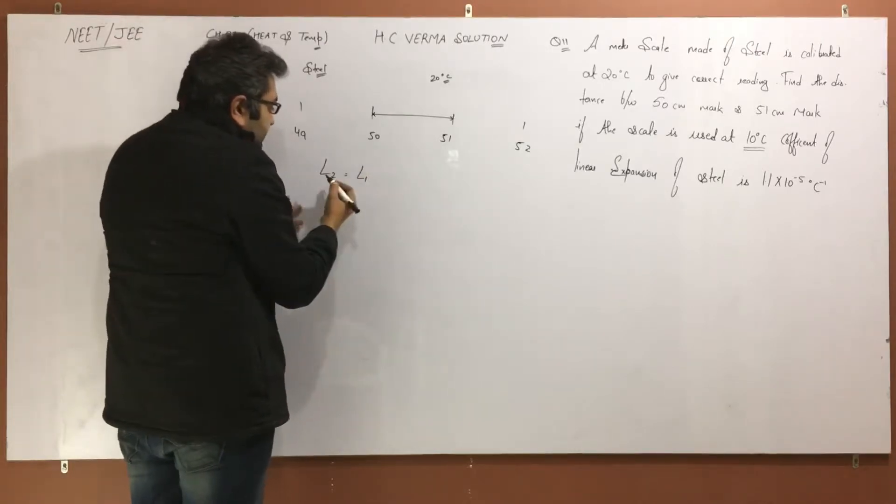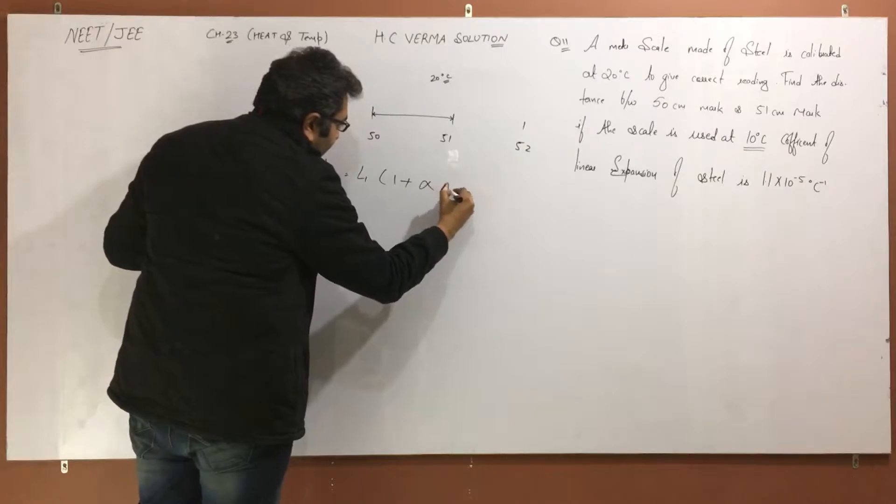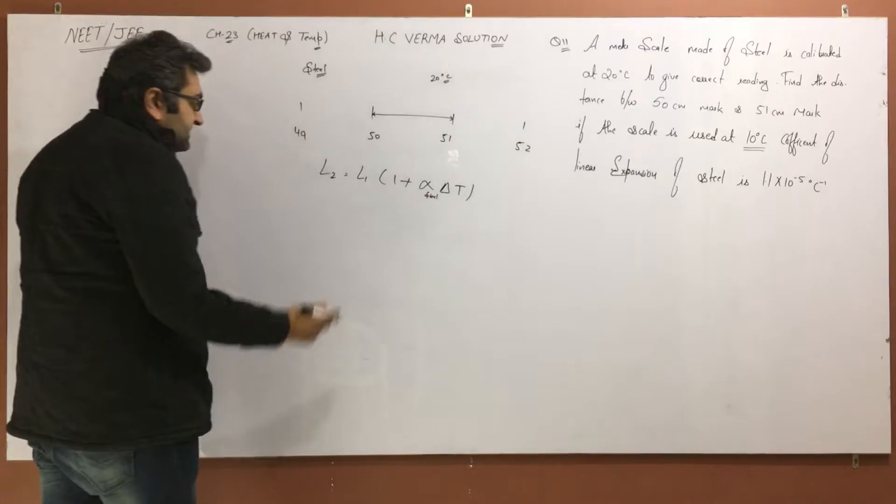The first length is initial and final. You can say that L2 = L1(1 + α∆T). Alpha is for steel. Let's put this value.